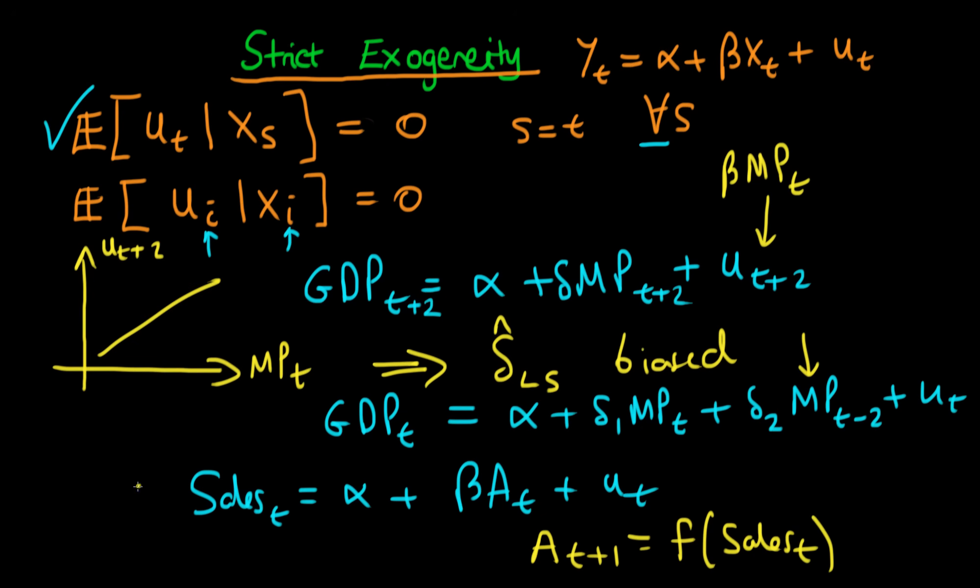Because of this feed-forward effect of advertising through to sales and from sales through to future levels of advertising, the error at time t is going to be correlated with advertising at period t+1. In this circumstance we would hypothesize that it's positively correlated with advertising at period t+1.